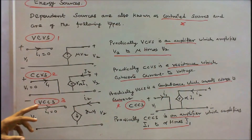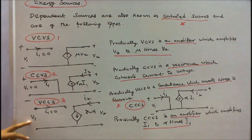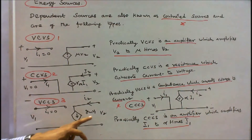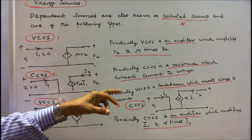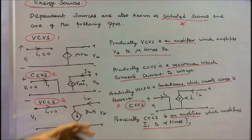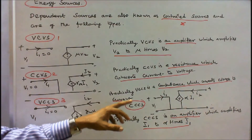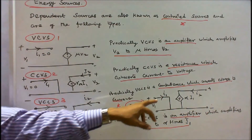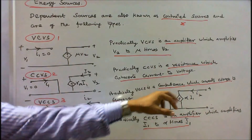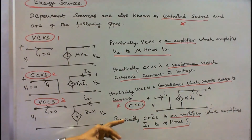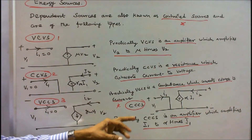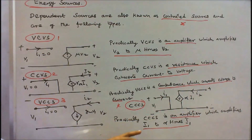The third type is the voltage controlled current source (VCCS). Here V1 is the input, I1 equals zero, and the output current is conductance times V1. The fourth type is the current controlled current source (CCCS), which is an amplifier that amplifies the input current.